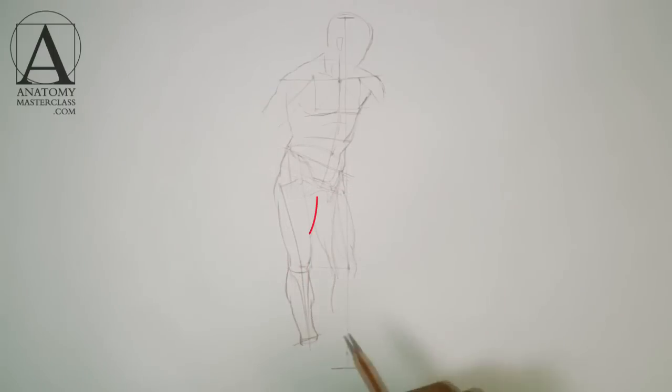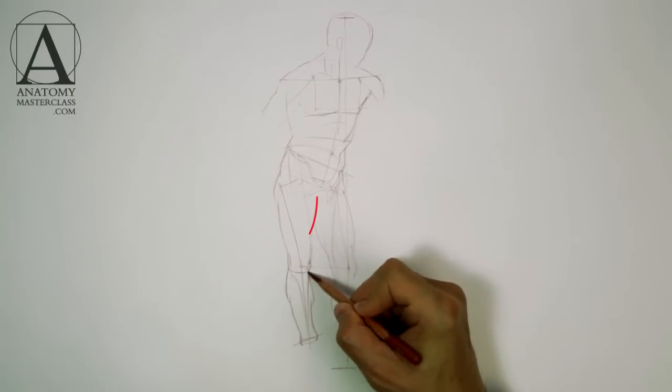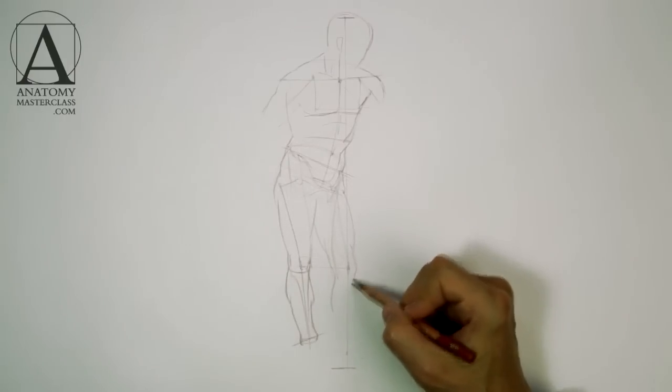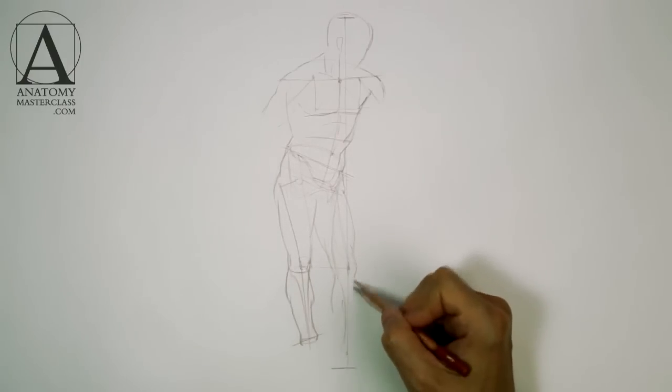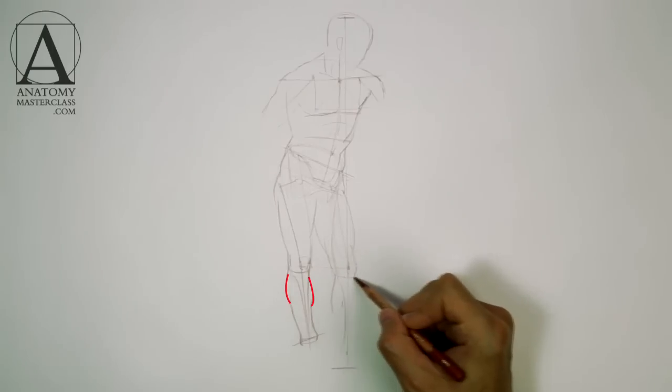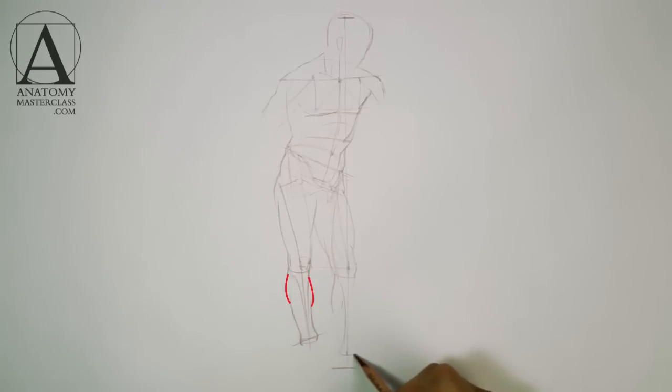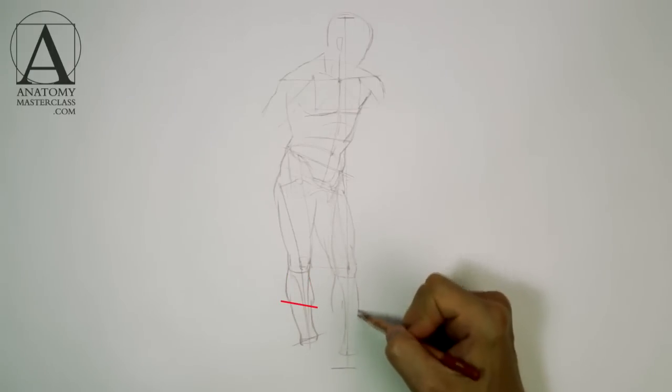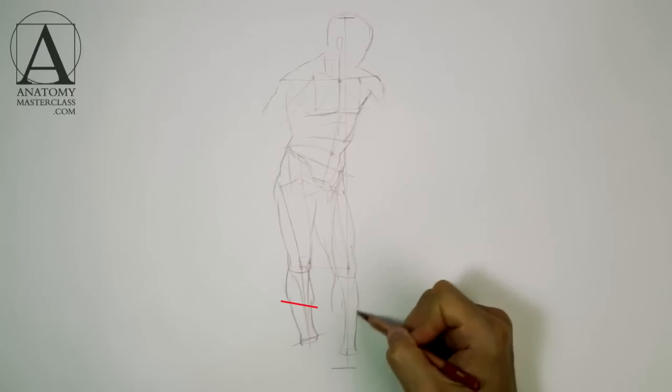The adductor group of muscles defines the outline of the upper half of the inner thigh. These muscles originate from the pelvis and run into the thigh bone. The calf muscles define the width of the lower leg. As you can see on this drawing, the inner portion of the calf muscle is slightly lower than the outer one.